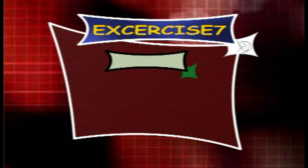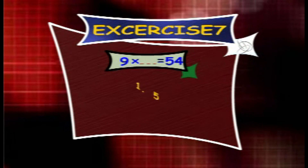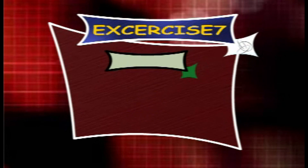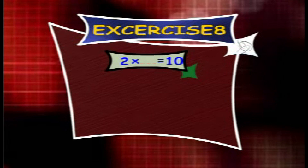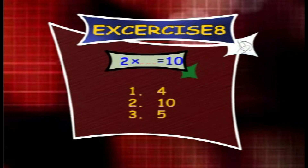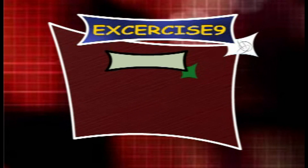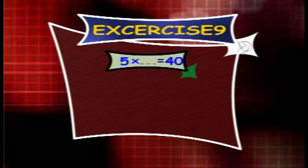Exercise 7: 9 × __ is equal to 54. Options are 5, 8, 6. Exercise 8: 2 × __ is equal to 10. Options are 4, 10, 5. Exercise 9: 5 × __ is equal to 40. Options are 8.